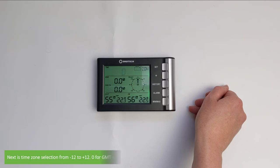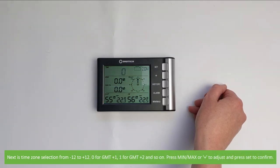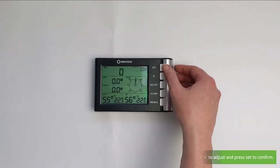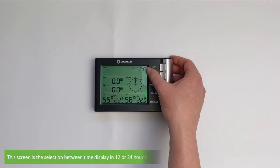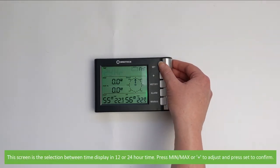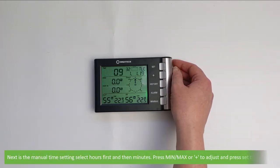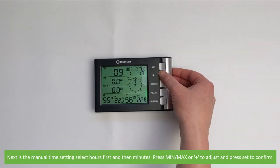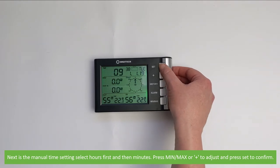Next is time zone selection, from minus 12 to plus 12. 0 is for GMT plus 1, 1 is for GMT plus 2 and so on. Press min max or plus to adjust and Set to confirm. This screen is a selection between time display in 12 or 24 hour time. Press min max or plus to adjust and press Set to confirm. Next is the manual time setting. Select hours first and then minutes. Again pressing min max or plus to adjust and press Set to confirm.